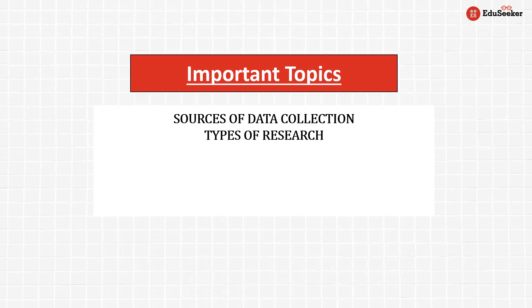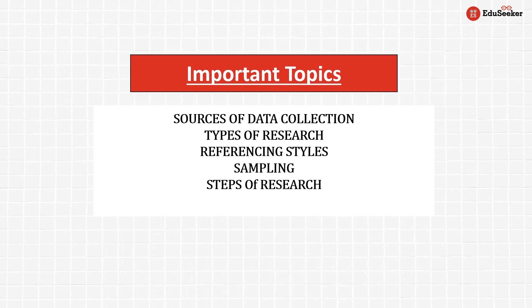The important topics in Research Aptitude include sources of data collection, types of research, different referencing styles, sampling such as probability and non-probability sampling, steps of research, ICT use in research, and current affairs related to new advancements. These are the key topics that are regularly asked in the question paper.